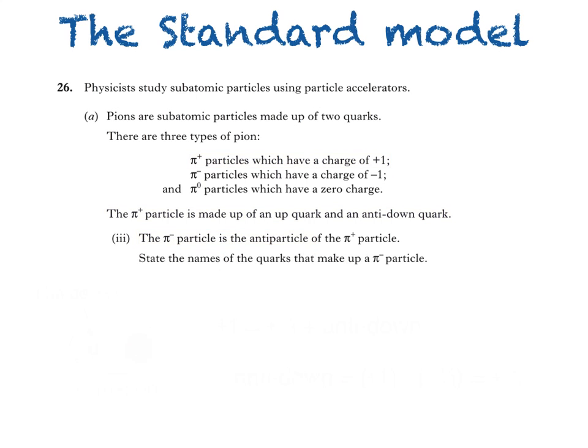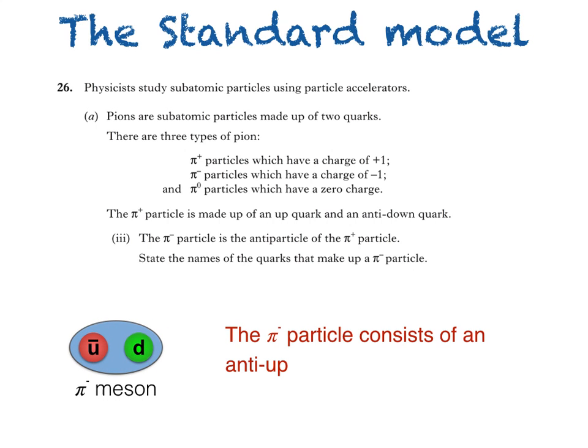Part three says the pi minus particle is the anti-particle of the pi plus particle. State the names of the quarks that make up a pi minus particle. This is a nice easy question. The pi plus particle is made up of an up quark and an anti-down quark. This means then that its anti-particle, the pi minus particle, is made up of an anti-up quark and a down quark. A particle and its anti-particle have the same mass but opposite charge.